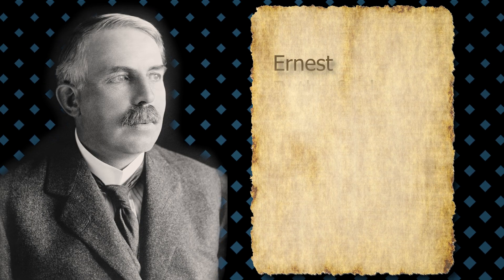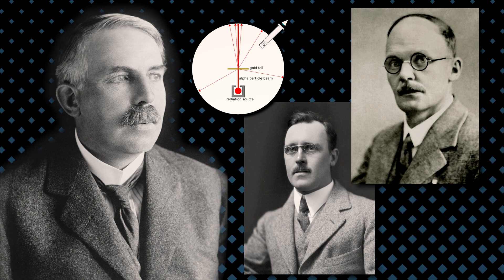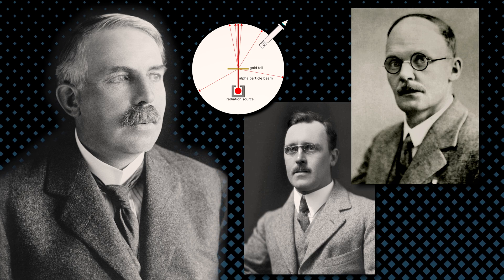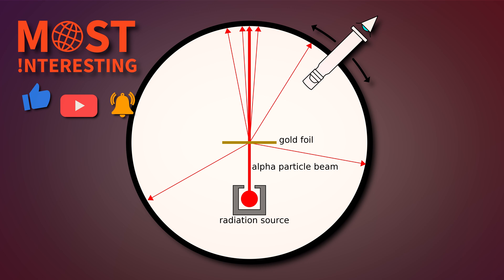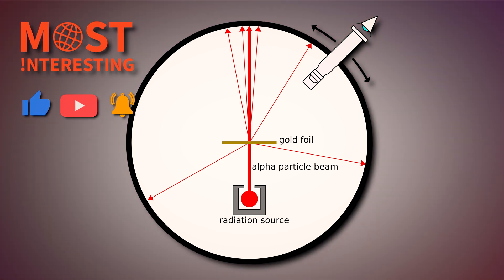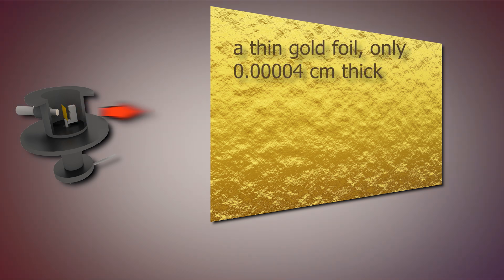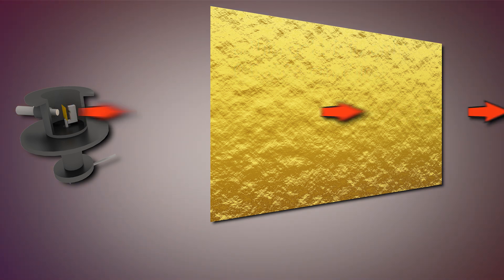Ernest Rutherford, a New Zealand-born physicist alongside collaborators Hans Geiger and Ernest Marsden conducted the famous gold foil experiment during the period between 1908 and 1913. This groundbreaking series of experiments provided crucial insights into the structure of the atom. This experiment involved firing alpha particles at a thin gold foil only 0.00004 cm thick, expecting them to pass through with minimal deflection based on the prevailing plum pudding model.